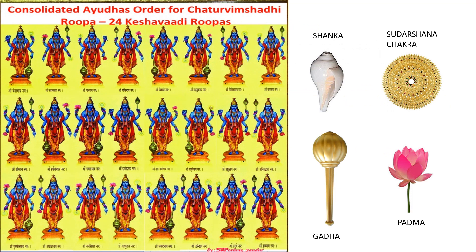When we arrange these four Ayudas of Lord Mahavishnu — Shankha, Chakra, Gada, Padma — we will get 24 forms. These 24 forms of Lord Vishnu together are known as Chaturvimshadi, as given in our Puranas. These four weapons or tools in different arrangements give us all these forms.